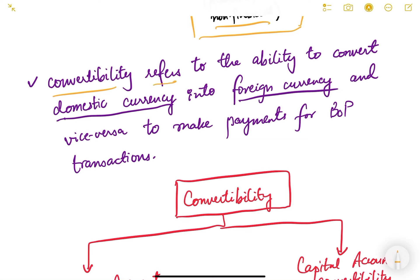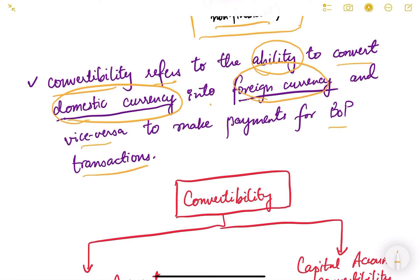Convertibility refers to the ability to convert domestic currency into foreign currency and vice versa, to make payments for balance of payment transactions. For example, if you are importing electronics from Japan, you will have to pay Japanese sellers, who will demand Japanese yen. So you will have to convert rupee into Japanese yen in order to import electronics from Japan.